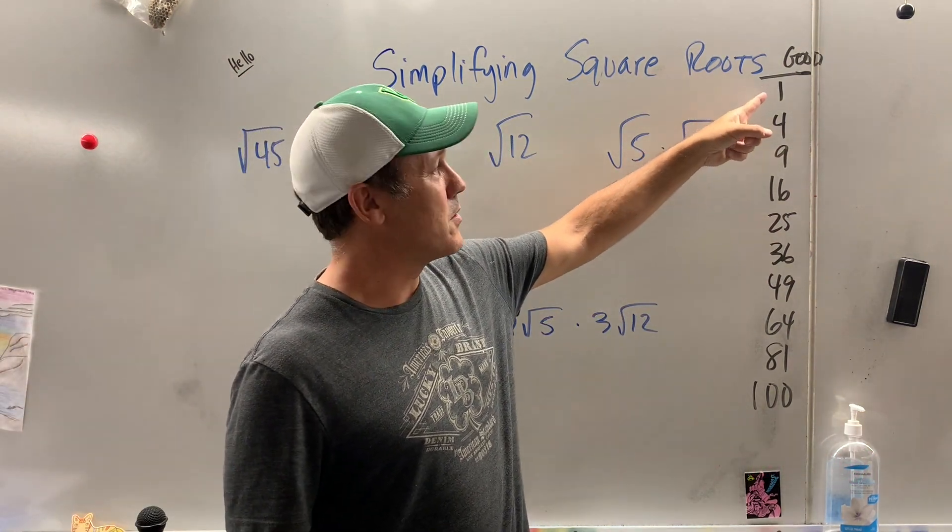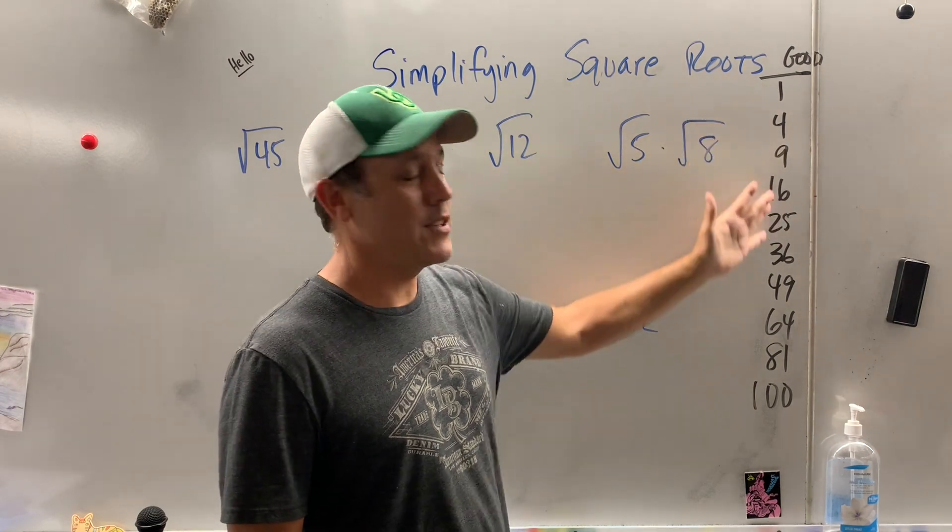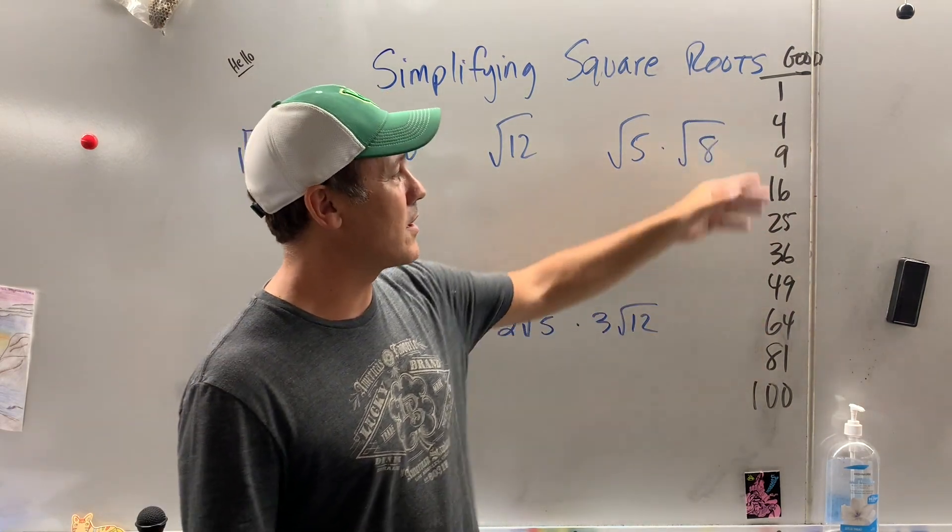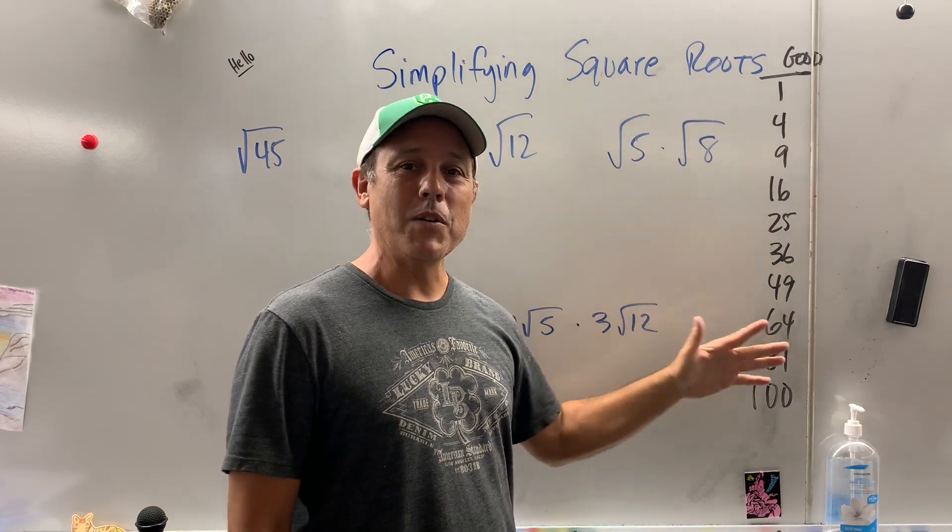You know what these numbers are. They're perfect squares. One squared, two squared, three squared, four squared. It's a free list of numbers. You can put it on your test, homework, all day long. You're gonna want to know your perfect squares.